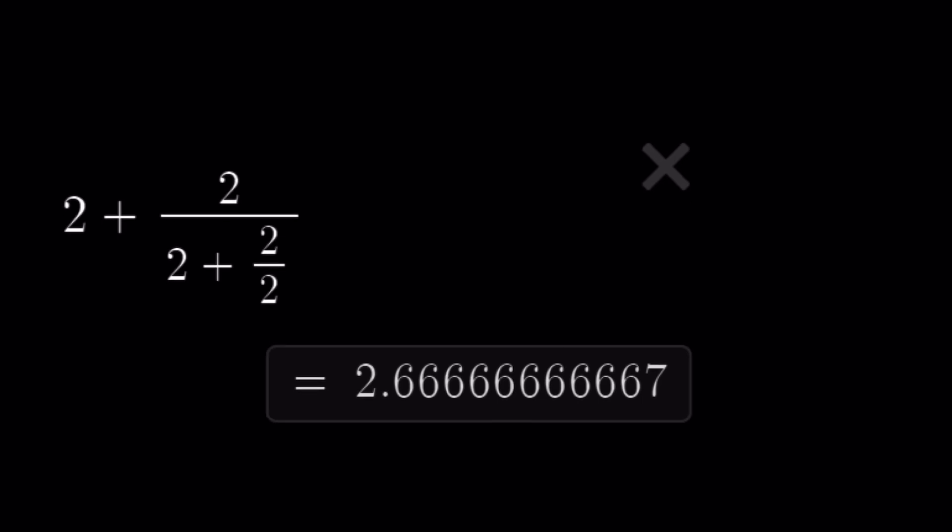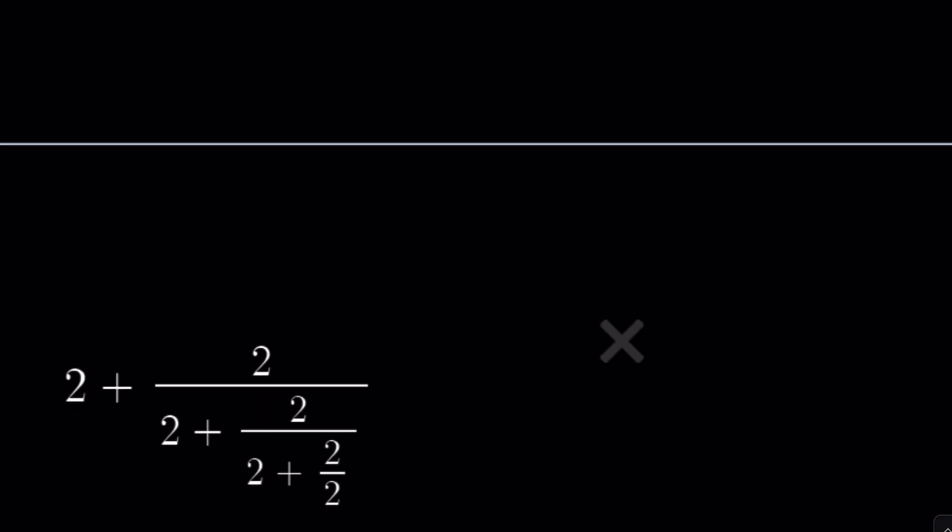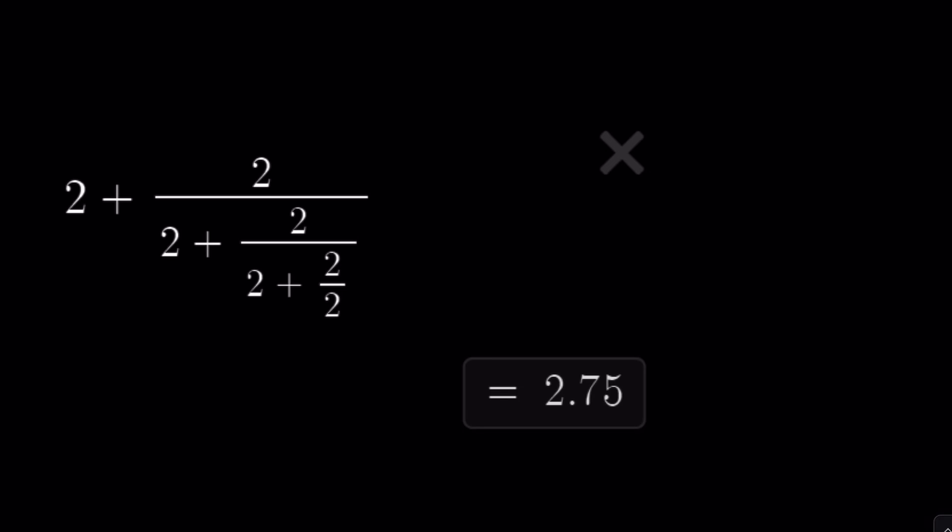2 plus 2 over 2 plus 2 over 2 is about 2.6 repeating, or you can call that 2.7-ish. And then the next one after that is going to be 2.75.